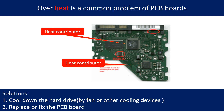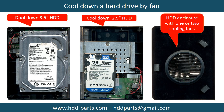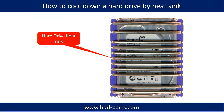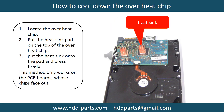Overheat is a common problem of hard drive PCB boards. Solutions: one, cool down the hard drive by fan or other cooling devices; two, replace or fix the PCB board. This picture shows the two main contributors to overheat. This picture shows how to use a fan to cool down the hard drive. This picture shows how to use a hard drive heat sink to cool down a hard drive. This picture shows how to cool down the overheat chips.